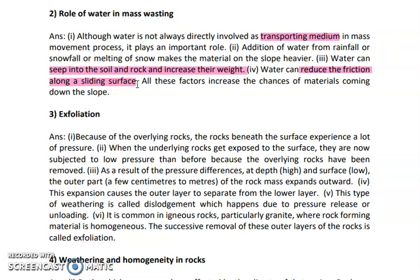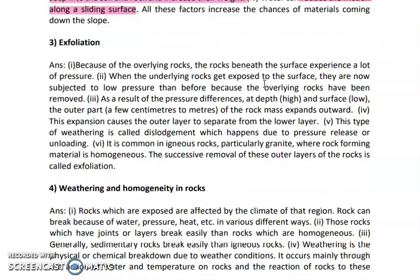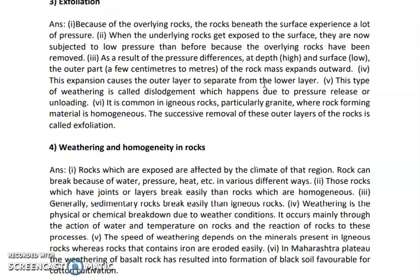Water can also reduce friction. Because of water, the smoothness of the surface increases, friction decreases, and the material can easily slide on the surface. All these factors are very much essential in mass wasting, which causes materials to come down from the slope. Hence the role of water in mass wasting is very important.